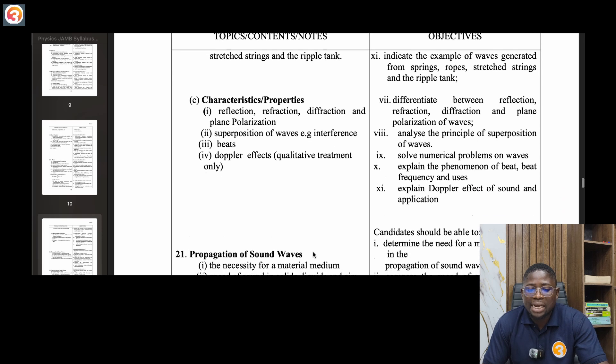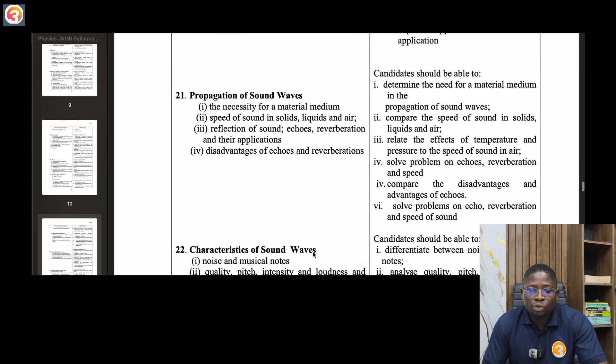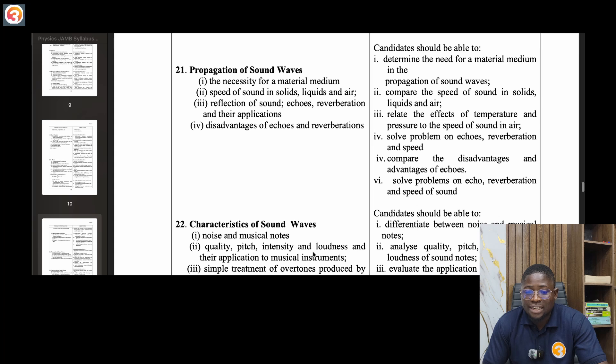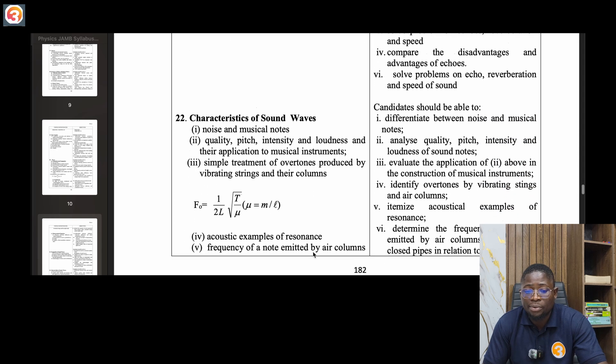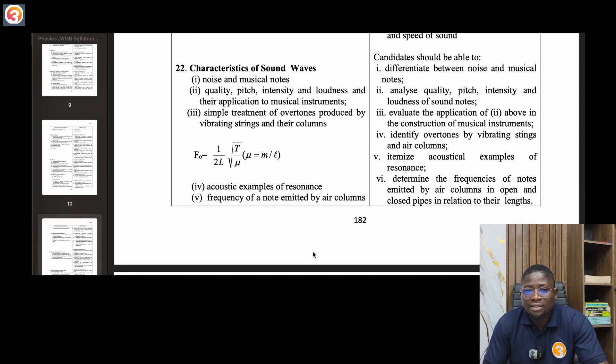Twenty-one, propagation of sound waves. The necessity for a material medium, speed of sound in solids, liquids and air, reflection of sound, echoes, reverberation and applications, disadvantages of echoes and reverberations. Twenty-two, characteristics of sound waves. Noise and musical notes, quality, pitch, intensity and loudness, application to musical instruments, simple treatment of overtones produced by vibrating strings and columns.